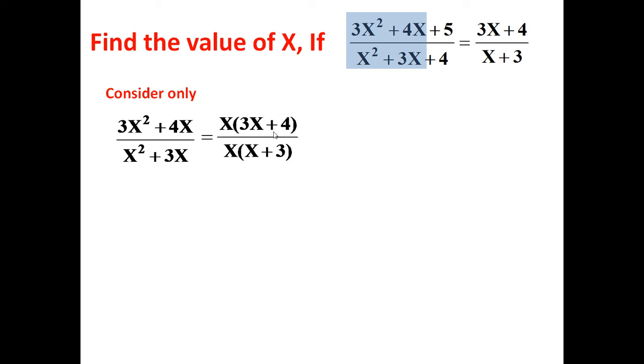Let us take x common, it becomes 3x plus 4 and x into x plus 3. x, x cancel, so it becomes 3x plus 4 divided by x plus 3.